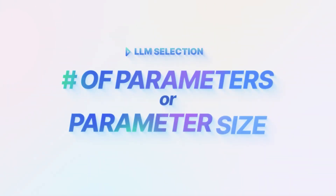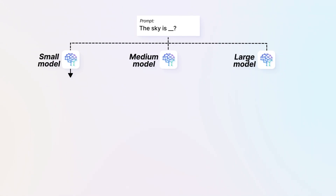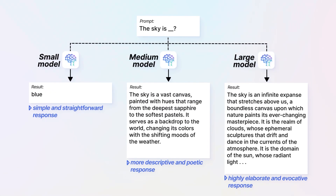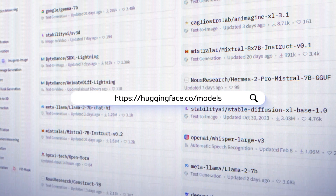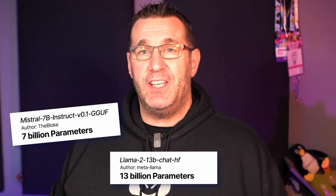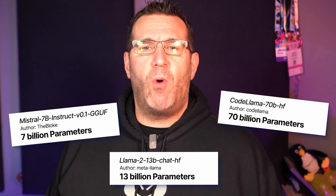First up: number of parameters, or parameter size. Neural networks are roughly modeled after the human brain, and this size relates to the size of the model's brain. The more parameters, the more it can generate realistic results based on multiple subjects. For example, you can download models from Hugging Face that will run on your local computer and they have 7 billion, 13 billion, or 70 billion parameters or more. Something like ChatGPT is rumored to have 1.7 trillion parameters in their model.